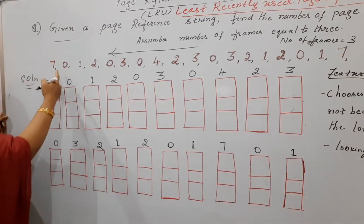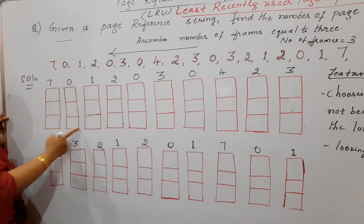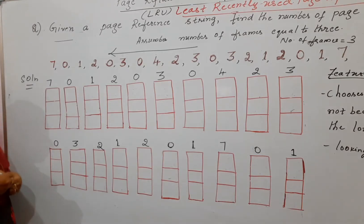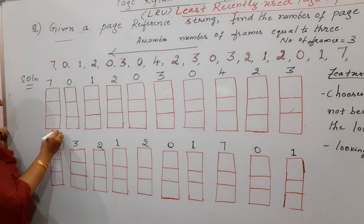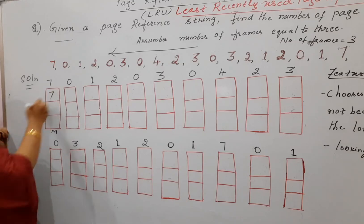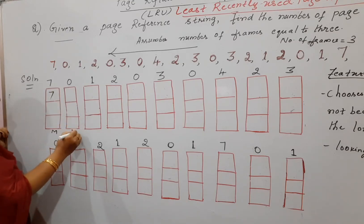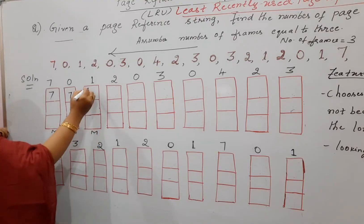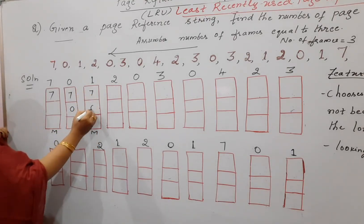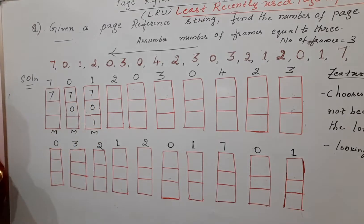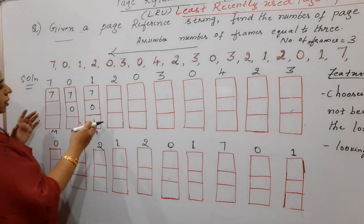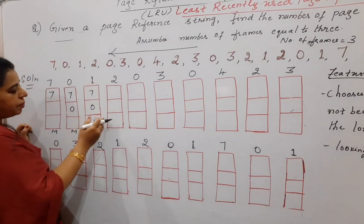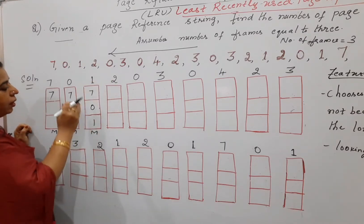The first three pages will definitely result in page faults only — there is a miss each time. You place each page into the frames. Until these three frames get filled up there is no problem. Once you see the next page number, you find all the frames filled up.